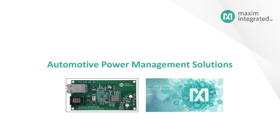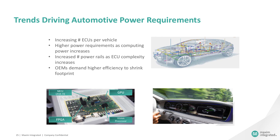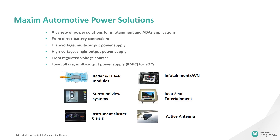Now let's discuss automotive power. The automotive industry is growing very fast and there are a lot of trendsetters coming into play. There has been a constant increase in the number of engine control units or ECUs in vehicles, which means there will be a larger power requirement. These ECUs can be either for vehicle infotainment systems or for advanced driver assistance systems. Maxim automotive infotainment and ADAS systems include radar, audio video for infotainment, surround view systems, rear seat entertainment, the instrument cluster, heads-up displays, and active antenna.